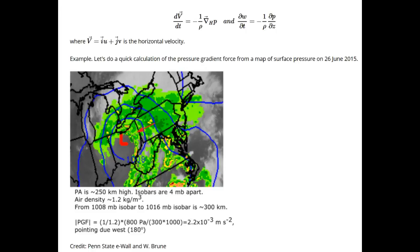Let's go through a quick calculation of the pressure gradient force for a low pressure system that passed over Pennsylvania on June 26, 2015.